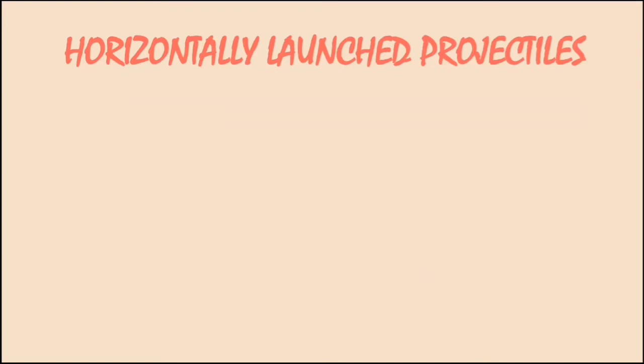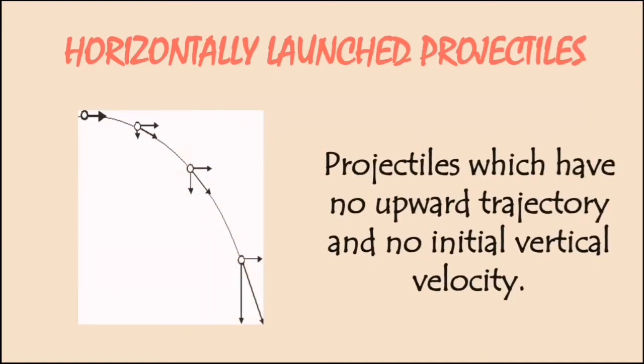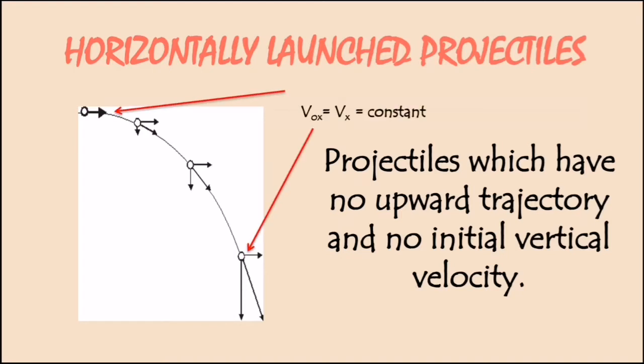Next, horizontally launched projectiles. Look at the figure. Projectiles which have no upward trajectory and no initial vertical velocity. The initial vertical velocity, as you can see from the left part, is 0 meter per second. That talks about its velocity in a vertical position. You can see also that there is no upward trajectory as the arrow kept on pointing at a certain distance only.